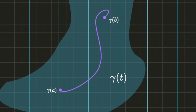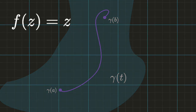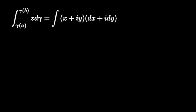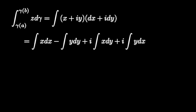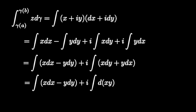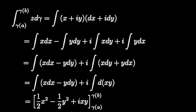Let's consider what happens when f is the identity transformation, f of z equals z. Writing out z in terms of its real and imaginary parts, and doing the same for the differential, we see that this calculation reduces to computing 4 integrals. Rewriting as two integrals, and observing that x dy plus y dx is the total differential of xy, we arrive at the result. Notice that this shows the integral of z dz around a closed curve equals 0.